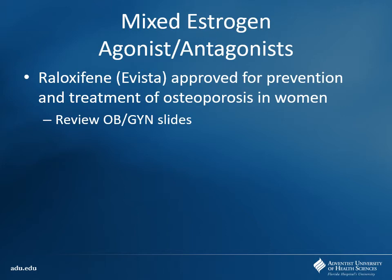Regarding raloxifen: it acts as an agonist in the bones, acting in place of estrogen, but it's an antagonist in breast tissue — that's the benefit. Side effects you might expect since it acts as an antagonist in uterine tissue as well: hot flashes, menopausal-type symptoms, vaginal dryness, dyspareunia. Keep those in mind. But for an older patient with osteoporosis, it can be a really good agent — you don't have to worry about breast cancer risk or uterine cancer risk. We'll cover this more in detail when we hit the OB-GYN section. Just note it's a mixed agonist-antagonist — agonist in bone for osteoporosis, antagonist elsewhere.